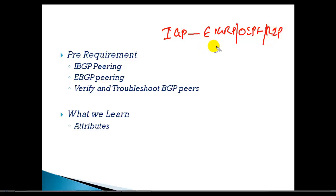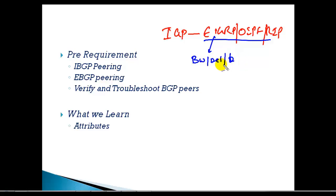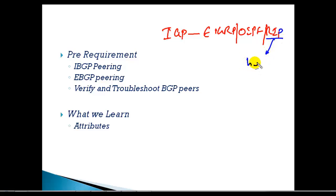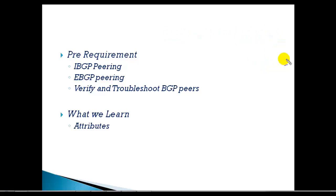These protocols are all interior gateway protocols, operating within the same autonomous system number, and every protocol has its own path manipulation. EIGRP considers bandwidth, delay, load, MTU, and reliability — five values it uses to decide the best route. OSPF uses only bandwidth with the formula 10 to the power of 8 divided by bandwidth. RIP decides the best route based only on hop count — whichever route has the least number of hops is considered the best route.